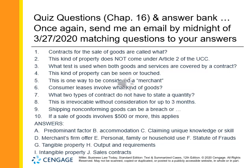Number 6: Consumer leases involve what kind of goods? Number 7: What two types of contract do not have to state a quantity? Number 8: This is irrevocable without consideration for up to three months. Number 9: Shipping non-conforming goods can be a breach or... Number 10: If a sale of goods involves $500 or more, this applies. You have an answer bank: A. Predominant factor. B. Accommodation. C. Claiming unique knowledge or skill. D. Merchant's firm offer. E. Personal, family, or household use. F. Statute of frauds. G. Tangible property. H. Output and requirements. I. Intangible property. And J. Sales contracts. Good luck!